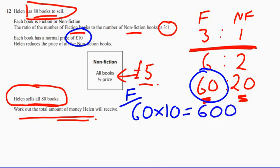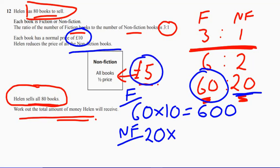And then we've got the non-fiction. So we know that there are 20 of those. 20 multiplied by, wait a minute. Helen reduces, she reduced the price of all the non-fiction books. So she sold them all for £5. So multiply that by 5. 20 times 5 is 100.